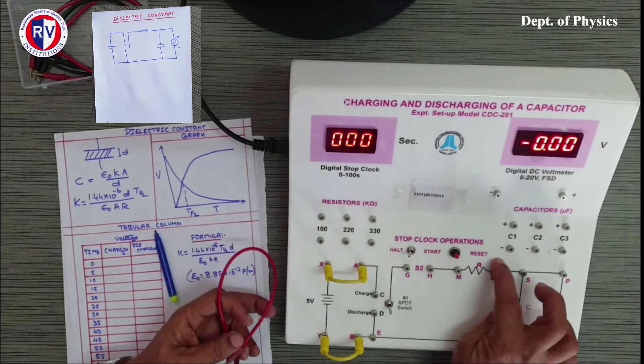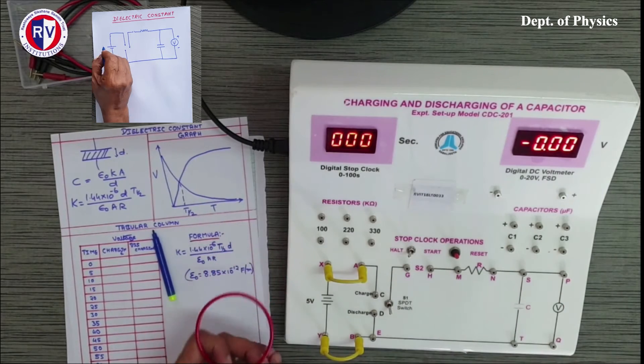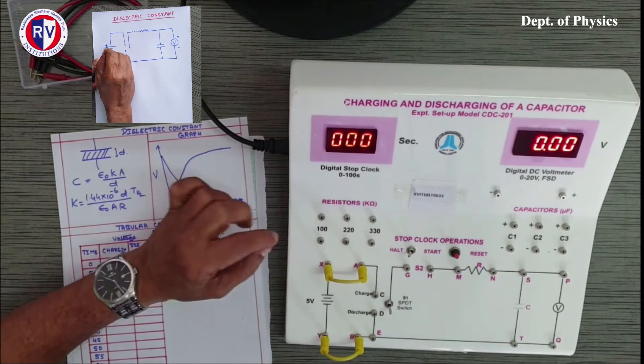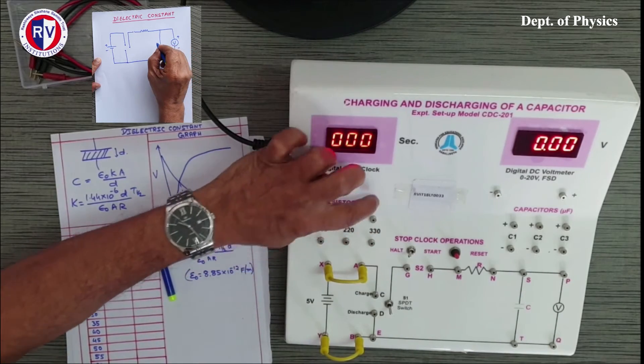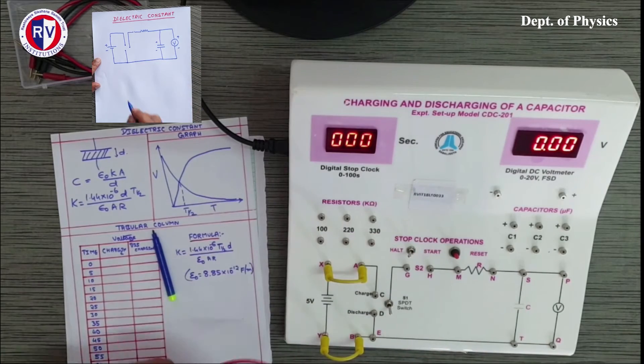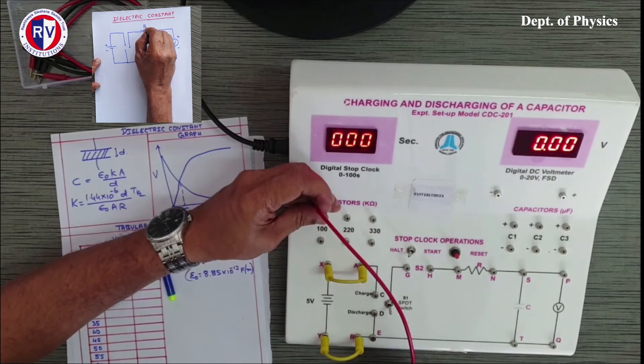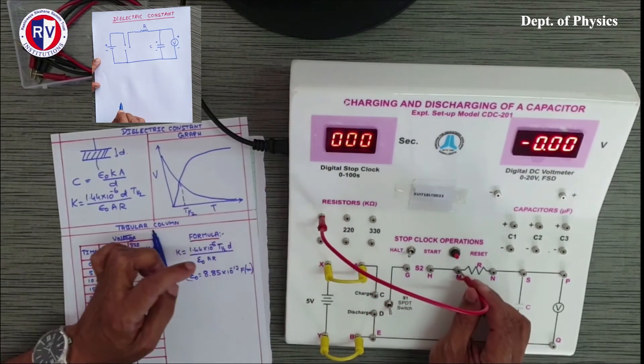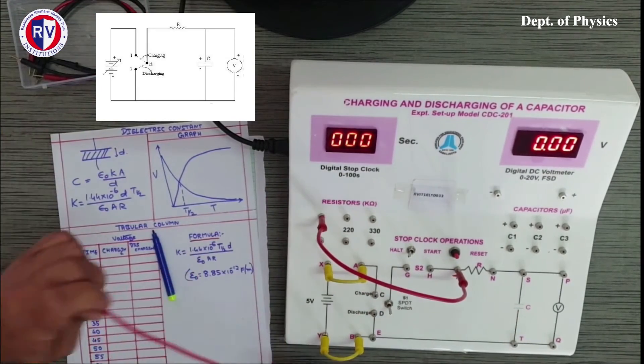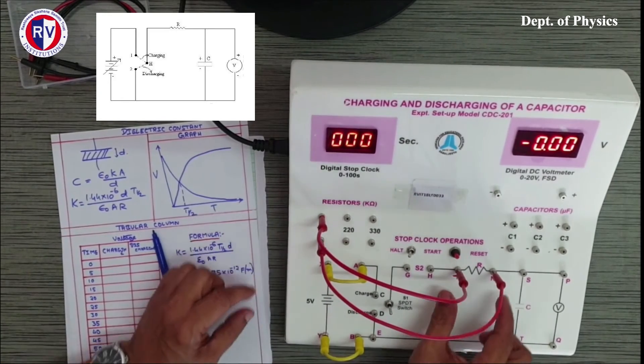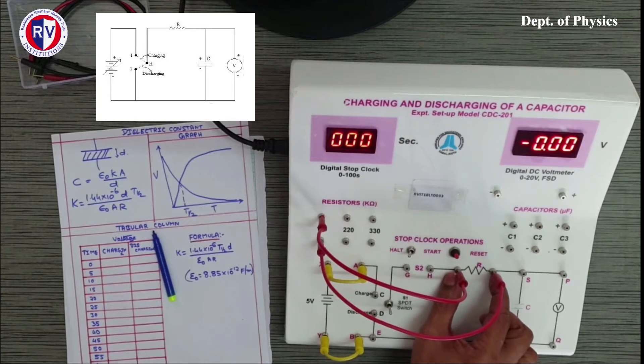Next we have a resistor. This is a high resistance. Here three resistors are provided: 100 kilo-ohm, 220 kilo-ohm, 330 kilo-ohm. Any one can be used in this case. Suppose if I want to use 100 kilo-ohm, 100 kilo-ohm is having two terminals, one terminal is connected here and the second terminal is connected. So the resistor is now coming in this position.